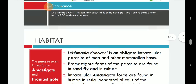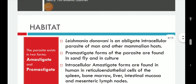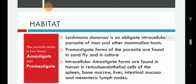Leishmania donovani is an obligate intracellular parasite of man and other mammalian hosts. It exists in two forms: amastigote and promastigote. Promastigote forms are found in the sandfly and in culture media, whereas intracellular amastigote forms are found in humans — in reticuloendothelial cells of the spleen, bone marrow, liver, intestinal mucosa, and mesenteric lymph nodes.